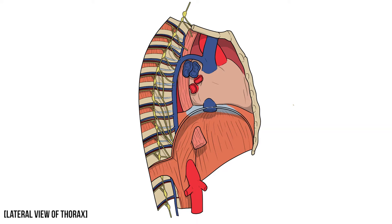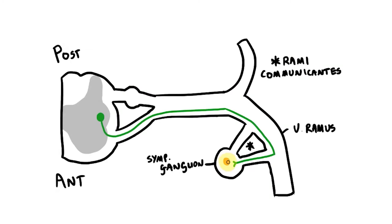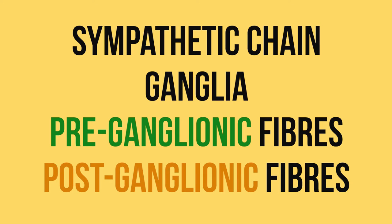More specifically I want to look at the thoracic splanchnics and how they provide sympathetic innervation to the abdomen. For this I'll be building on some ideas that I looked at in my previous video on the sympathetic nervous system, so if any of these terms look unfamiliar to you, I'd recommend checking out that video before watching this one.